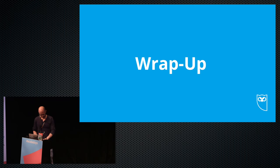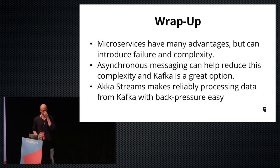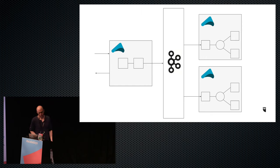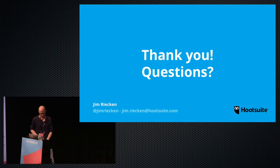To wrap up: microservices have a lot of advantages, but there are trade-offs with an increasing chance of failure and increased complexity. Asynchronous messaging can help reduce this complexity, and Kafka is a really good option for doing this. Finally, Akka Streams and Reactive Kafka make reliably processing data from Kafka with full back pressure really simple. This is what an architecture using Akka Streams and Kafka might look like — services running Akka Streams internally, producing to Kafka, and consuming using Akka Streams in other services.